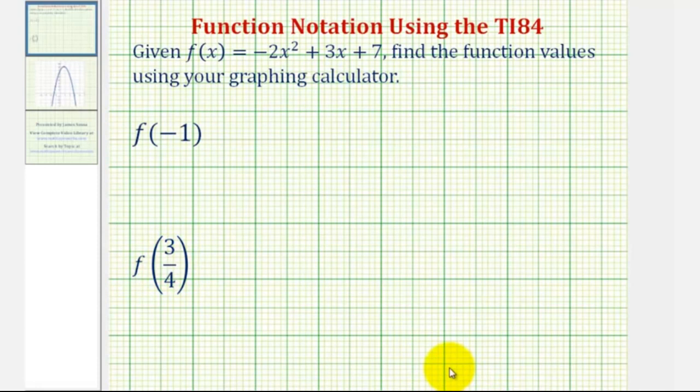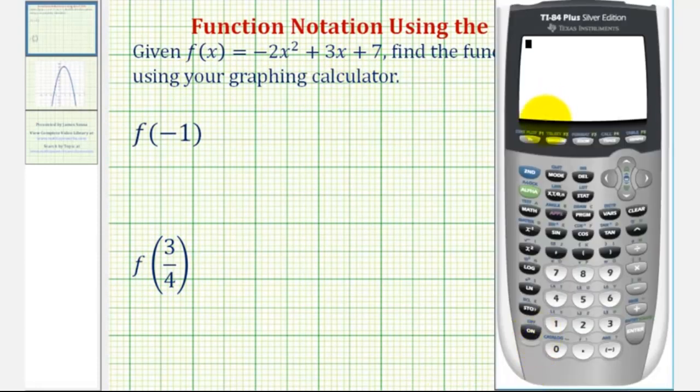For the first step, we're going to enter the function into the graphing calculator. So we're going to press Y=, clear out any old functions, and now we'll enter the new function of -2x² + 3x + 7.